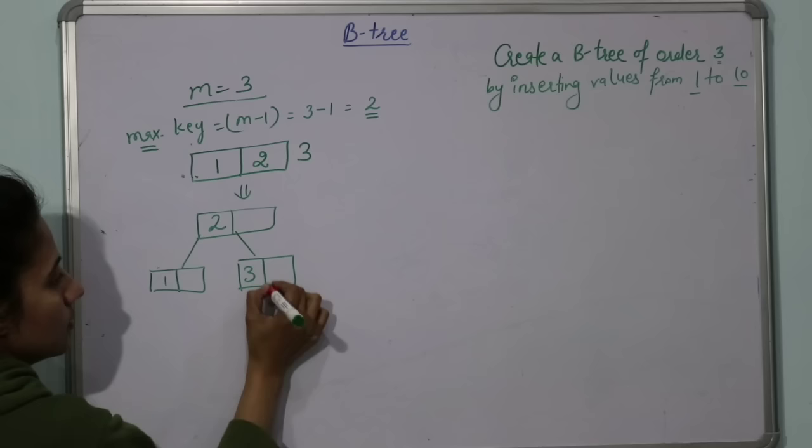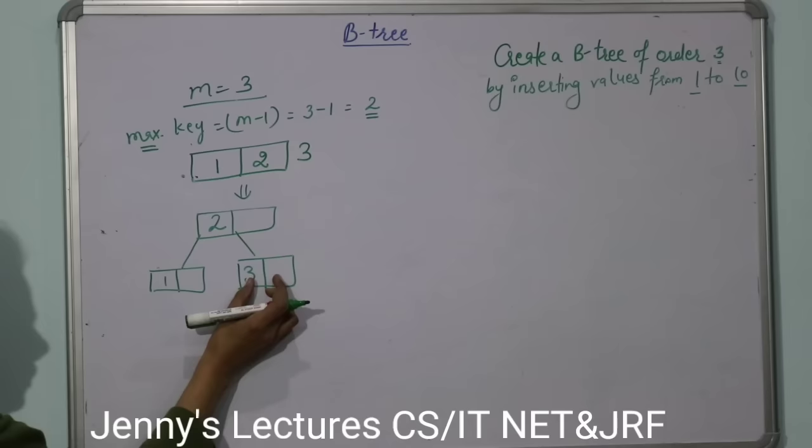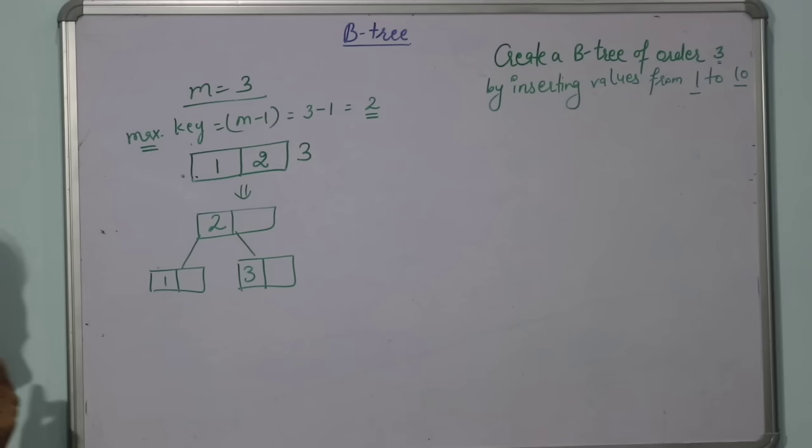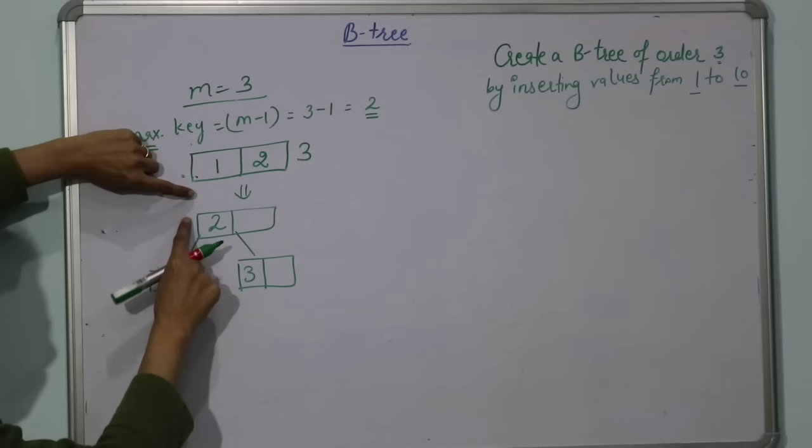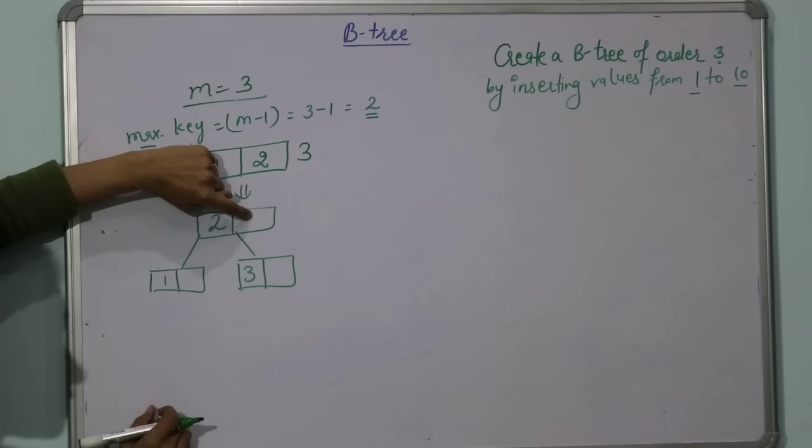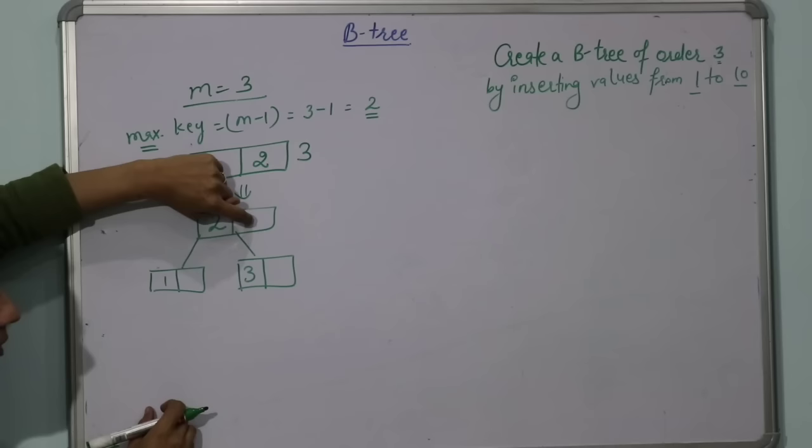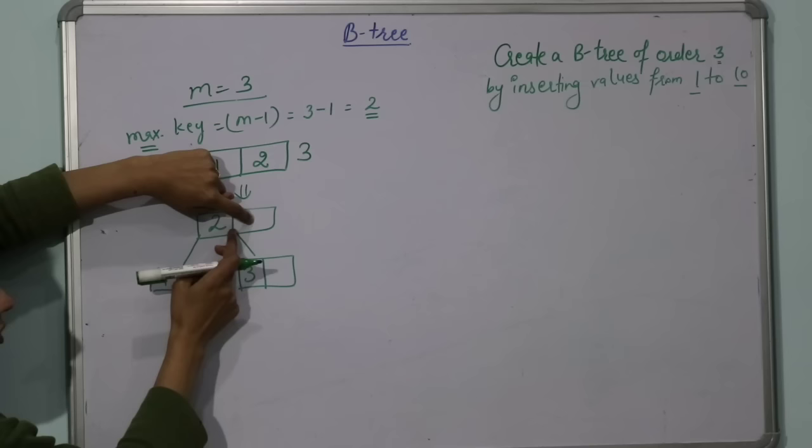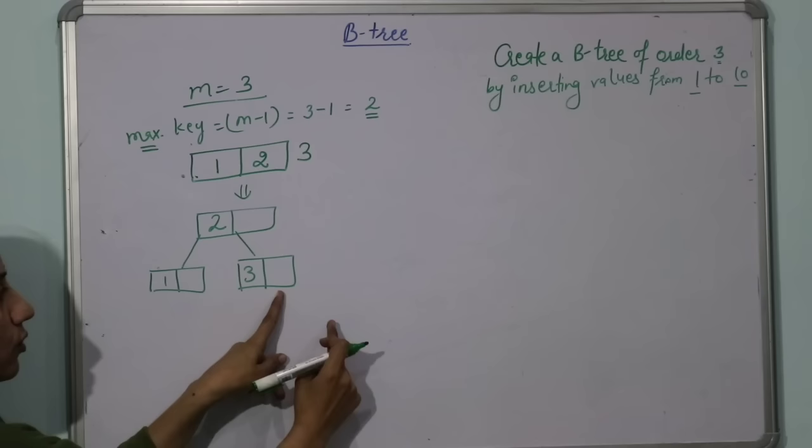Next key to insert is 4. 4 is greater than 2, so we go here, but you won't insert here although this place is empty, because values are always inserted in leaf nodes. So in the right part below, at 3, 4 is also greater than 3, so it will be inserted here because it is a leaf node. 4 is inserted.